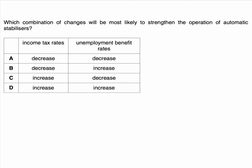Which combination of changes will be most likely to strengthen — in other words, make the automatic stabilisers more effective? The right answer to this question is D: higher income tax rates and higher unemployment benefit rates. In other words, an increase in the progressivity of the income tax system and an increase in the generosity of the unemployment benefit system is likely to have the biggest impact.